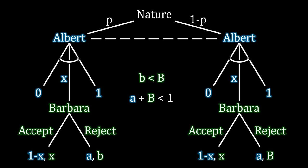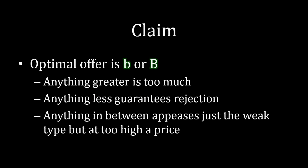Alright, how do we go about solving this game? Well, it's the same as always. I'm going to begin by making a claim that the optimal offer for Albert is either lowercase b or uppercase B. And the logic of this is exactly as we had seen in the past, where we actually had fixed values for Barbara of 0.25 or 0.5.